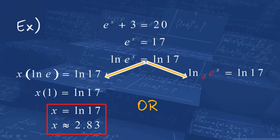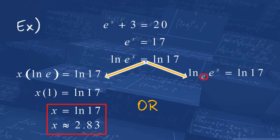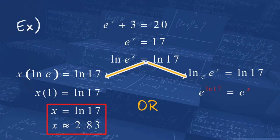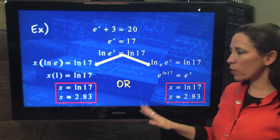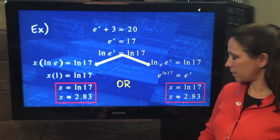Another way of looking at it: when the base of your log is the same as the base of what you're taking the log of, that side just equals your exponent. So x equals natural log of 17. Most people forget this shortcut, but here's where it comes from: e to the power of the natural log of 17 equals e to the x — that's the definition of the logarithm. So e to the natural log of 17 equals e to the x; your bases are the same, therefore your exponents must be the same. Therefore x equals natural log of 17, approximately 2.83. Both methods give the same result.